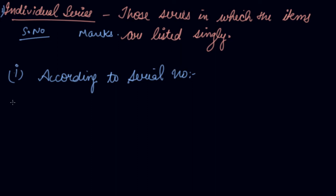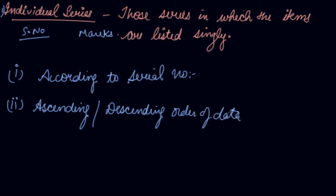Second, we have ascending or descending order of data. The data we have collected can be arranged into individual series in ascending or descending order. Ascending means the smallest value is placed first, while descending means the highest value is placed first.